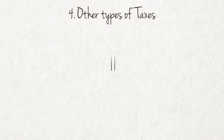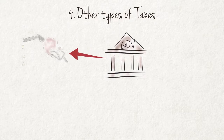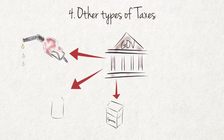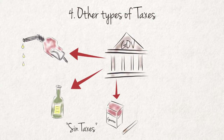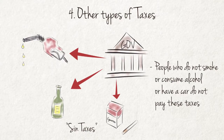The government also collects a number of other taxes. Fuel is subject to tax, paid by everybody that purchases fuel. Another form of tax is excise duty on tobacco and liquor — these taxes are often referred to as sin taxes. Importantly, these taxes can be legally avoided: people who do not smoke will not pay excise duty on tobacco, and people who do not consume alcohol will not pay excise duty on liquor. However, whether you are rich or poor, it is inevitable that at some stage you will pay some type of tax.